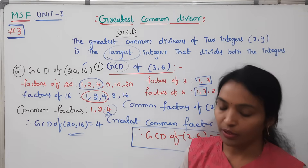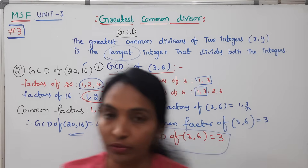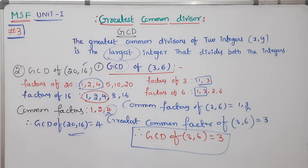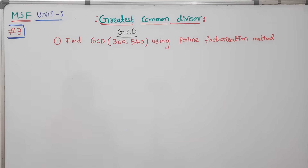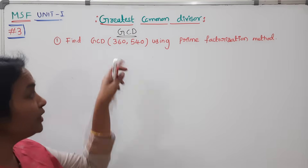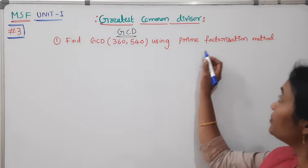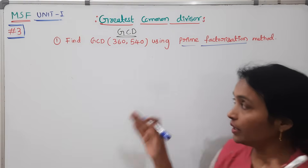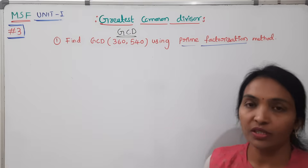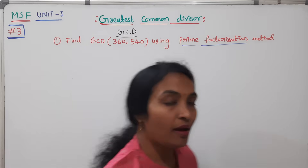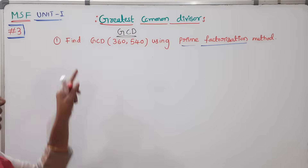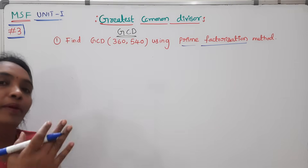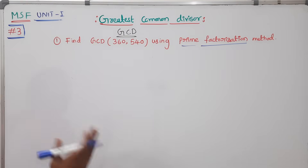Now we will discuss finding GCD using the prime factorization method. Find GCD(360, 540) using the prime factorization method. First, find the individual prime factorizations of each number, then find the GCD from those.